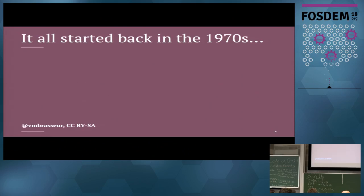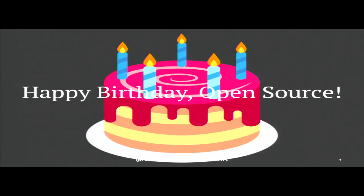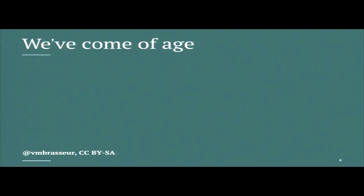As we all know, we have been sharing software for as long as there has been software. But back in the 1970s, the organizations that created the hardware figured out there was a business model behind the software, so the people who were previously sharing and modifying it no longer could. Stallman fixed that, thank you. In 1983: the GNU project; 1984: the Open Source Initiative — as we heard earlier, we sang happy birthday to them because open source became a thing 20 years ago to this very day.